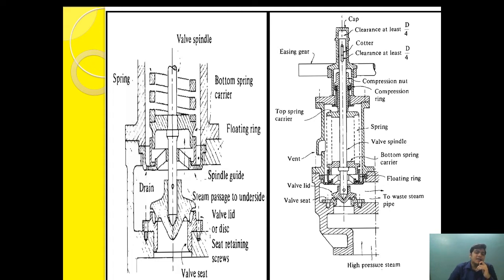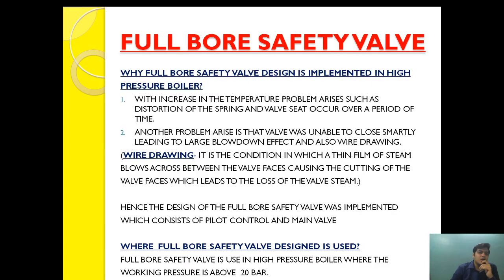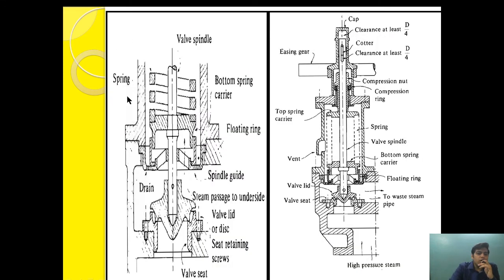When these springs are subjected to such high temperature, they are subjected to distortion, which affects the functioning of the valve and also reduces the overall service interval of the safety valve. Another problem is that the valve was unable to close smartly, leading to a large blowdown effect and also wire drawing. When the valve used to sit after steam pressure was released, a thin film of steam used to form which prevented the valve from seating very smoothly.